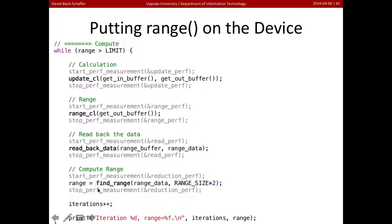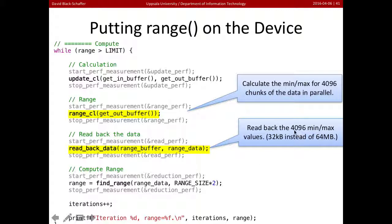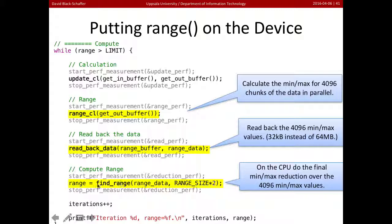Here's the main loop. We still call update CL as before. But now we also call range CL, which runs the range kernel on the GPU — creating all 4,096 partial minimums and maximums in parallel while keeping data on the GPU. Then we read back just those 4,096 values. Finally, on the CPU, we find the range over that much smaller amount of data.